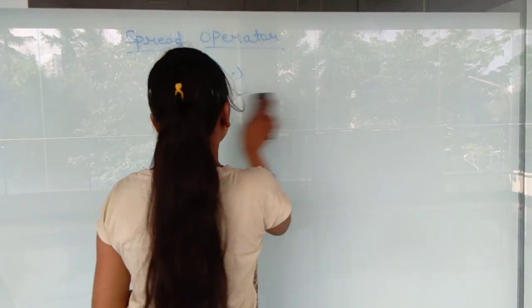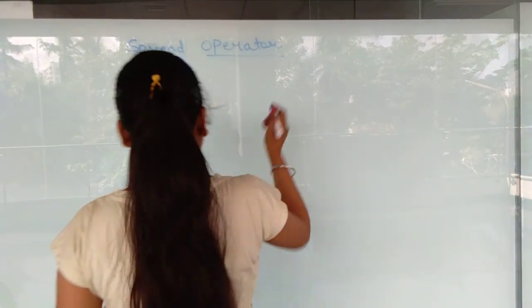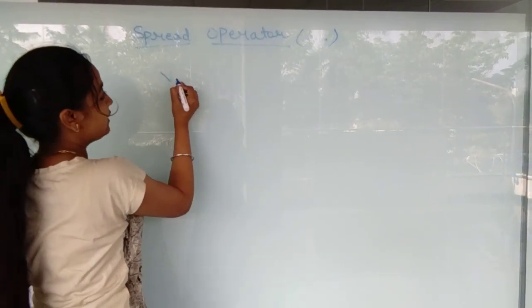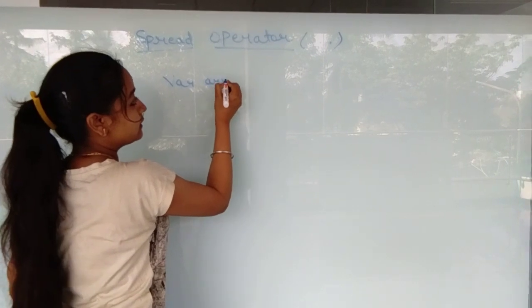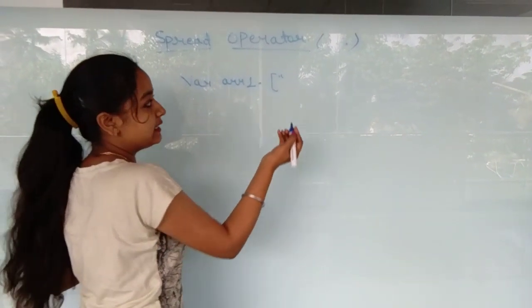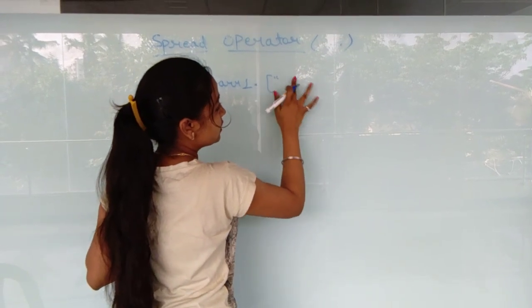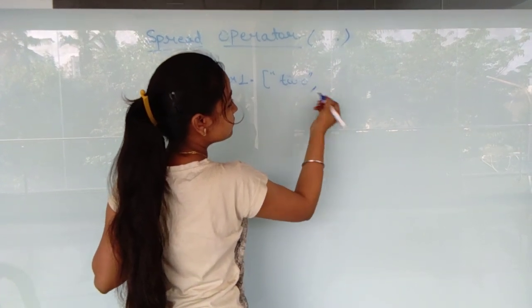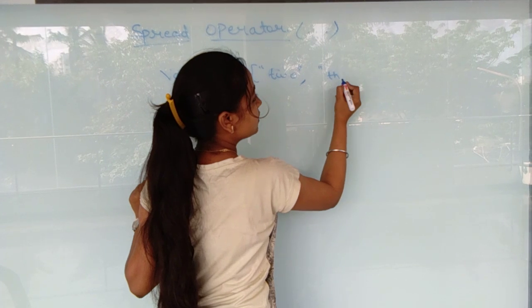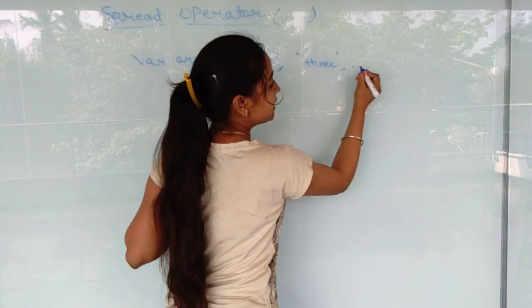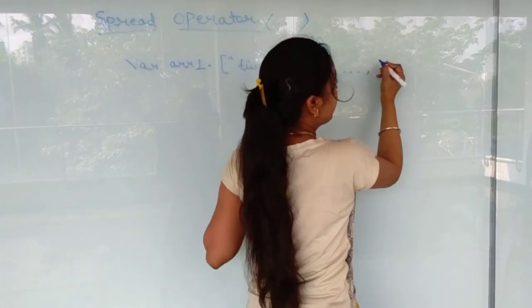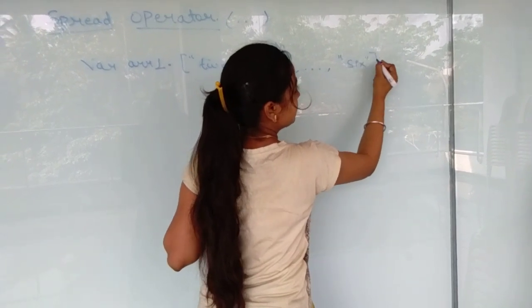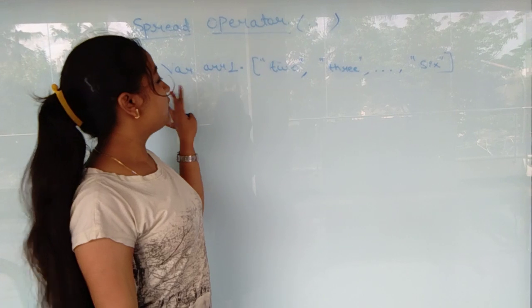Spread operator. So first of all, we write var array one. Let's take here two, three and we will take here the spread operator and write here six. This was the first variable, pretty clear.